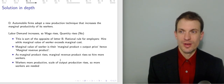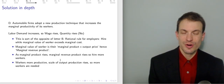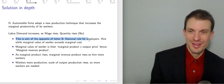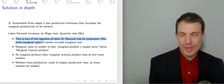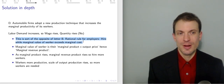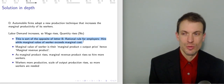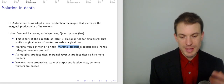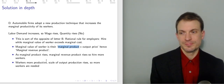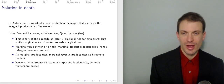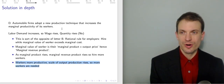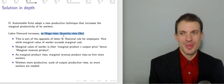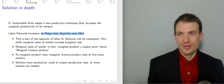Option D: Automobile firms adopt a new production technique that increases the marginal productivity of its workers. If workers are more productive, the rational rule for employers says you'd hire while the marginal value of the worker exceeds the marginal cost. The marginal value of the worker is their marginal product — additional output each worker produces — multiplied by the output price, giving us the marginal revenue product. As marginal product rises, marginal revenue product rises, so you'd hire more workers. The scale of output would rise, so you'd need more workers — wage rises and quantity rises. This is an increase in labor demand, but that's not what we were looking for. So it wasn't option D.